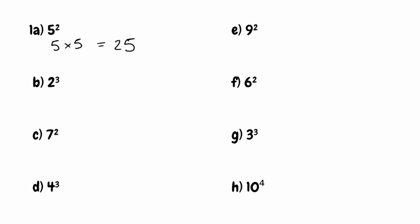Now looking at part b, we've got 2 to the power of 3. Whenever we've got something to the power of 3, we also refer to this as cubed. We've got the base number of 2 and the power of 3, so we're multiplying it by itself 3 times. 2 times 2 gives us 4, then multiply by 2 again, that's going to give us 8. So 2 cubed is equal to 8.